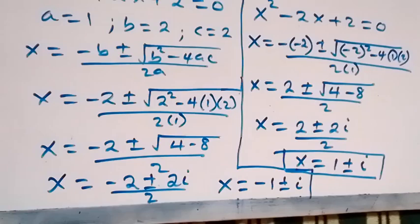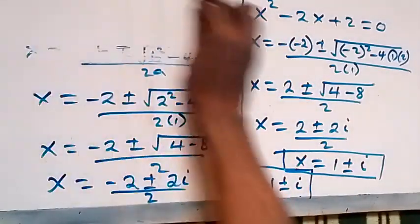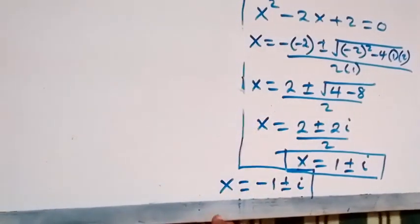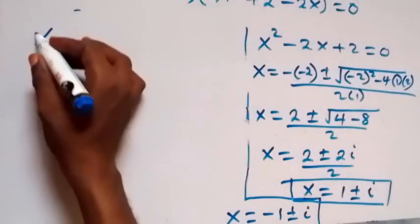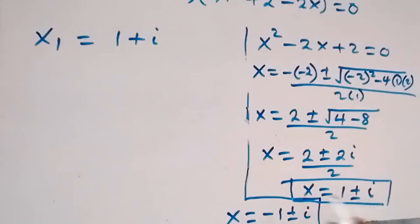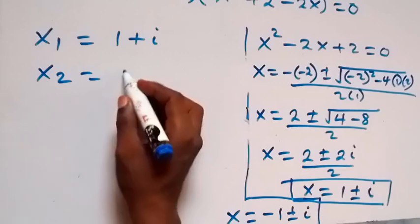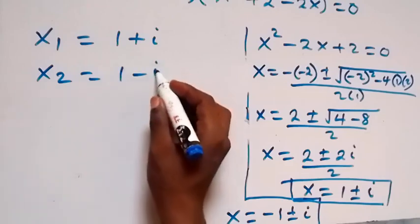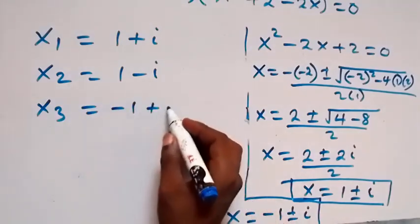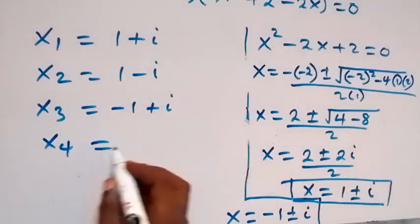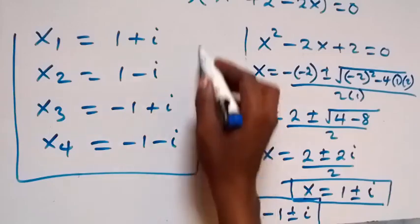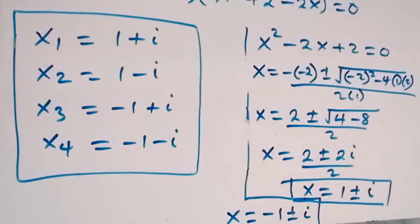All together, we have 4 solutions to this problem. x1 equals 1 plus i, x2 equals 1 minus i, x3 equals minus 1 plus i, and x4 equals minus 1 minus i. These are the 4 solutions to this given problem. Thank you for watching.